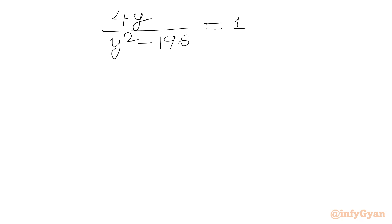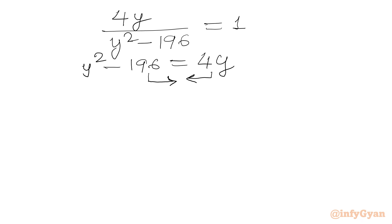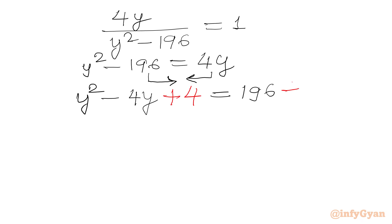Now we cross multiply to get y² - 196 = 4y. Taking 4y to the LHS and -196 to the RHS gives y² - 4y = 196. Now I will add 4 to both sides, giving us (y - 2)² = 200 on the LHS and 200 on the RHS.